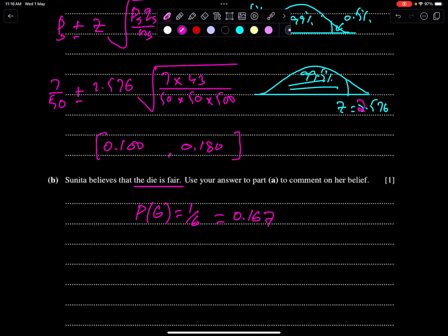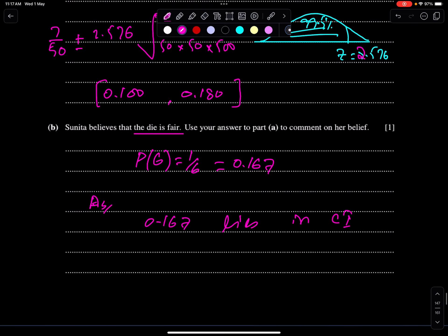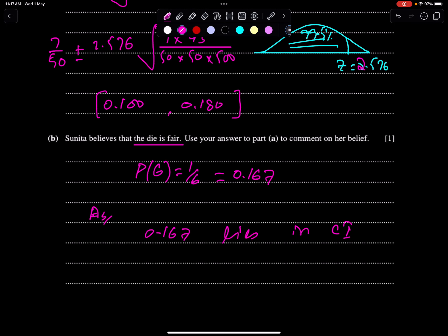Now you have to check this number in confidence interval. Since 0.167 lies in this interval, therefore her belief is justified. As 0.167 lies in CI, therefore her belief is justified. Or you can say the die is fair.